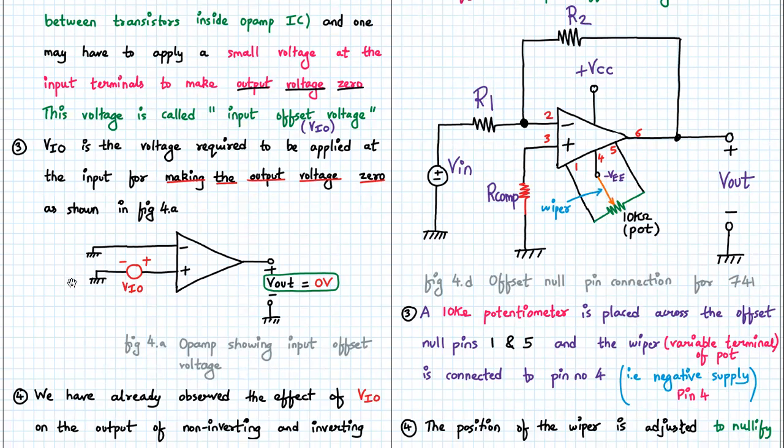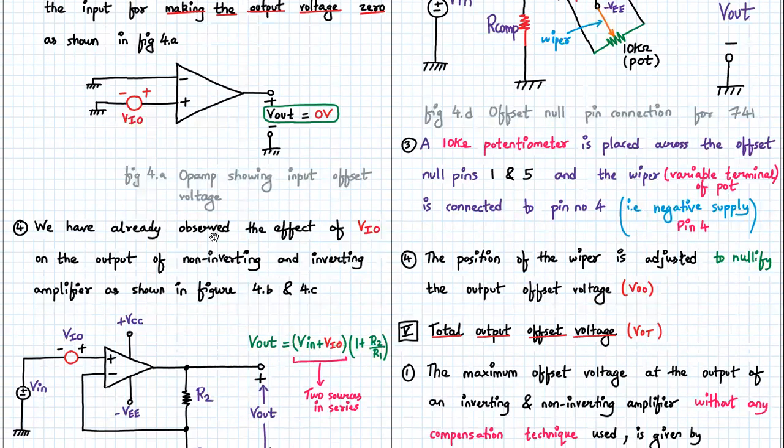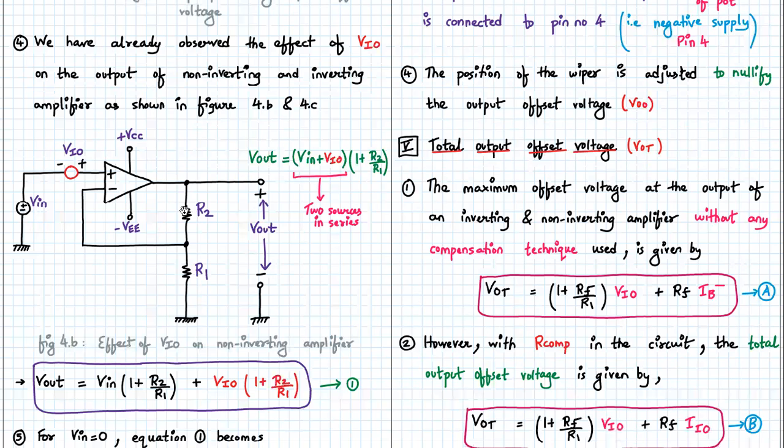This voltage is called input offset voltage, denoted by VIO. So VIO is the voltage required to be applied at the input for making the output voltage zero, as shown over here. So we apply, both the terminals are normally grounded, so we apply a small voltage in either the non-inverting or inverting terminal such that the output becomes zero.